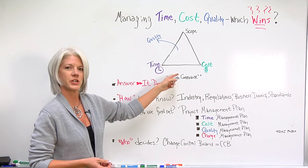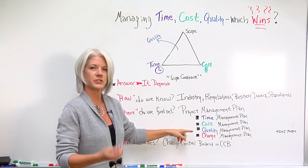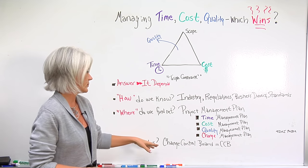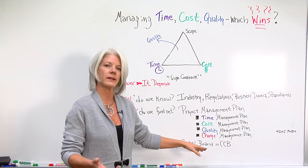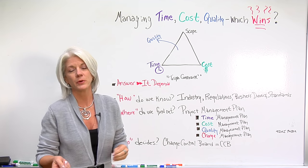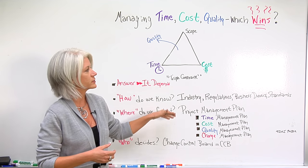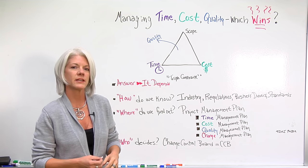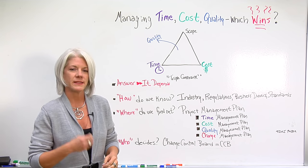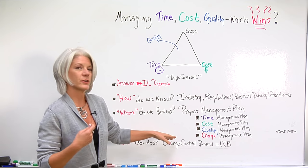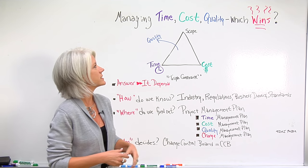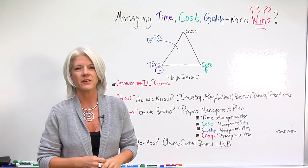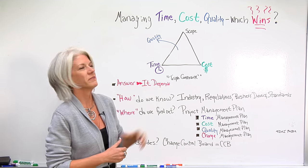As things change throughout the project, we take these changes through the change management process. The change control board for our project are the people who go through different factors. They are the ones representing the business units and other stakeholders on the project. They have the authority to make these decisions, taking the pressure off the project manager so they don't have to decide which one wins.